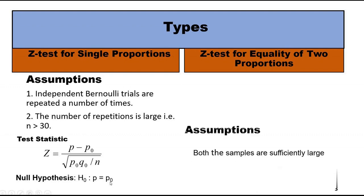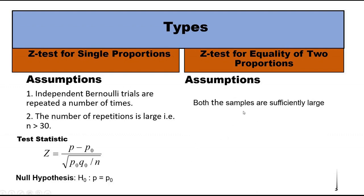On the other hand, the assumptions is both the samples are sufficiently large. The test statistic is this and null hypothesis is p1 equal to p2. Now we move to the z-test for single proportion.